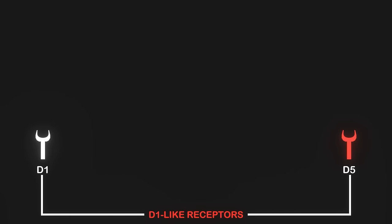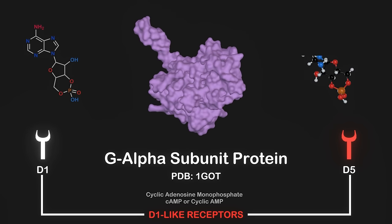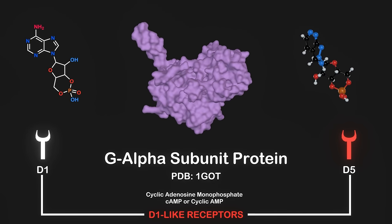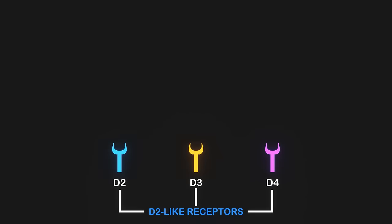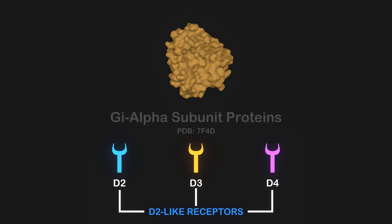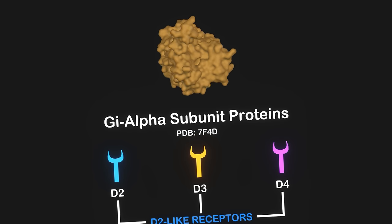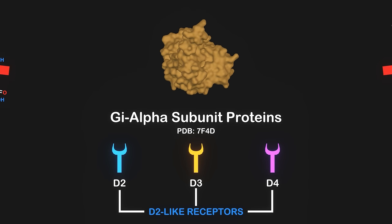When dopamine binds to D1-like receptors, these GPCRs coupled to G-alpha-s subunit proteins and stimulate the production of cyclic adenosine monophosphate, although it can also be called cyclic AMP. However, when dopamine binds to D2-like receptors, these GPCRs coupled to G-alpha-i proteins, also known as G-alpha-I proteins, thanks biologists, and inhibit cyclic AMP production.